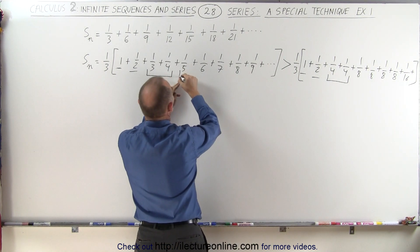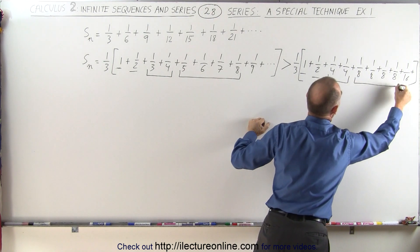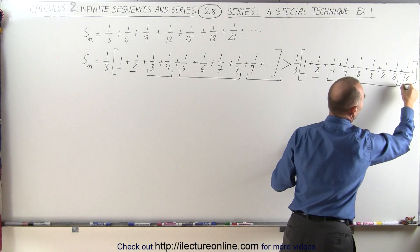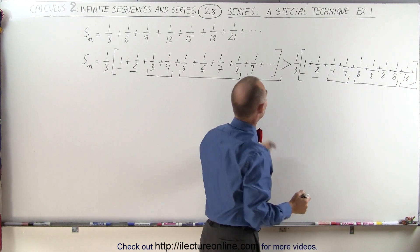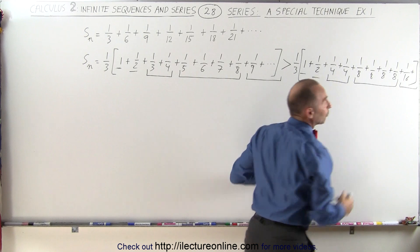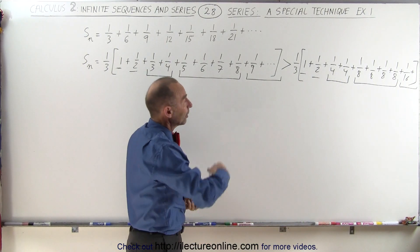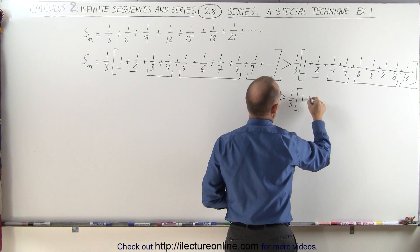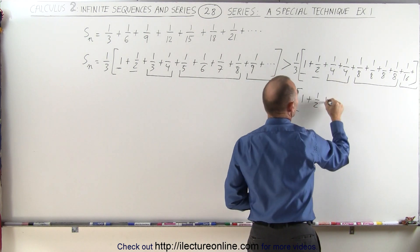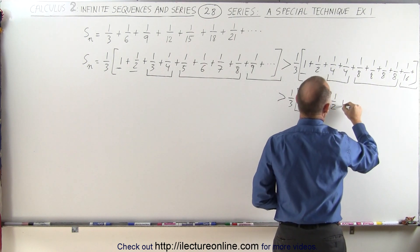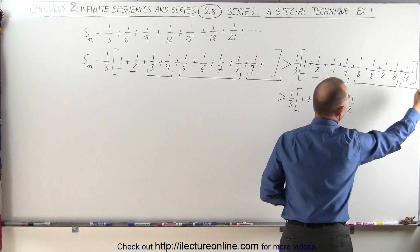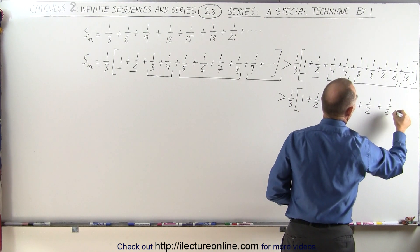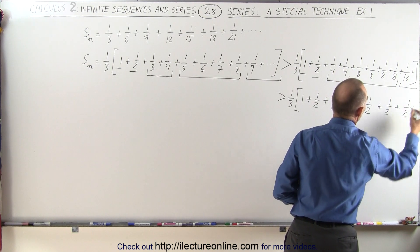Then I take the next four terms and say that those are bigger than those four terms. Then the next eight terms are going to be bigger than the next eight terms, and so forth. On the right side, this equals one-third times: one plus one-half — when I add those two together I get plus one-half. Add those four together I get plus one-half. Add the next eight together, plus one-half. The next sixteen give me plus one-half. The next thirty-two, plus one-half, and so forth.